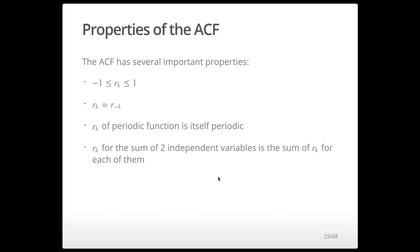The ACF has several important properties. Like other correlation measures, it ranges between minus 1 and 1. The autocorrelation at a positive lag equals that at the corresponding negative lag — it is an even function, so it doesn't matter which way we shift the time series. The ACF of a periodic function is itself periodic. Additionally, the ACF for the sum of two independent variables x and y equals the sum of their individual ACFs.